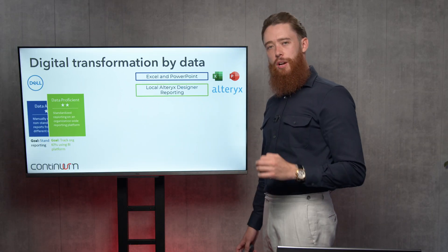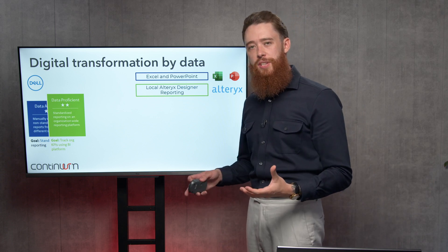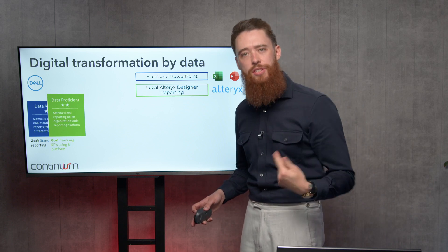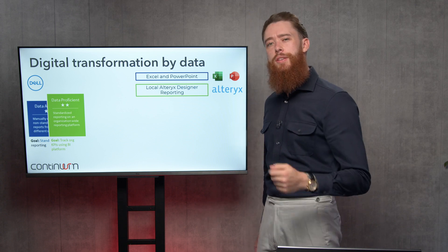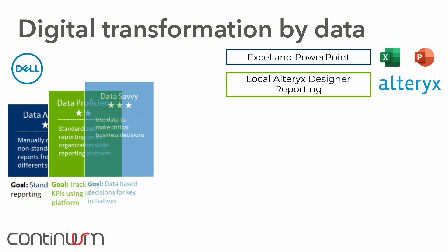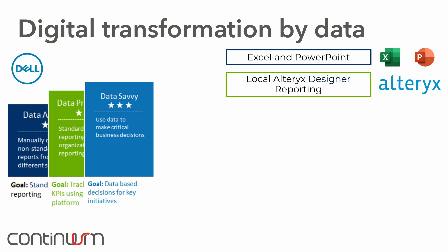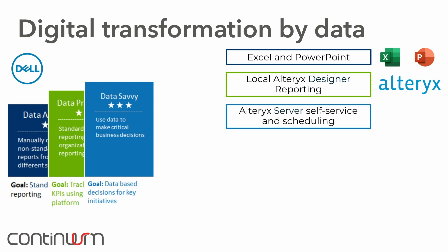Once we're proficient in our data and all of our processes are standardised, repeatable, robust, and watertight, we move on to the next stage. This next stage is called data savvy. We've upgraded to four star now. We've got our manual reports, standardised and automated them. Now we can start to utilise tools like the Alteryx Server — another product they offer.